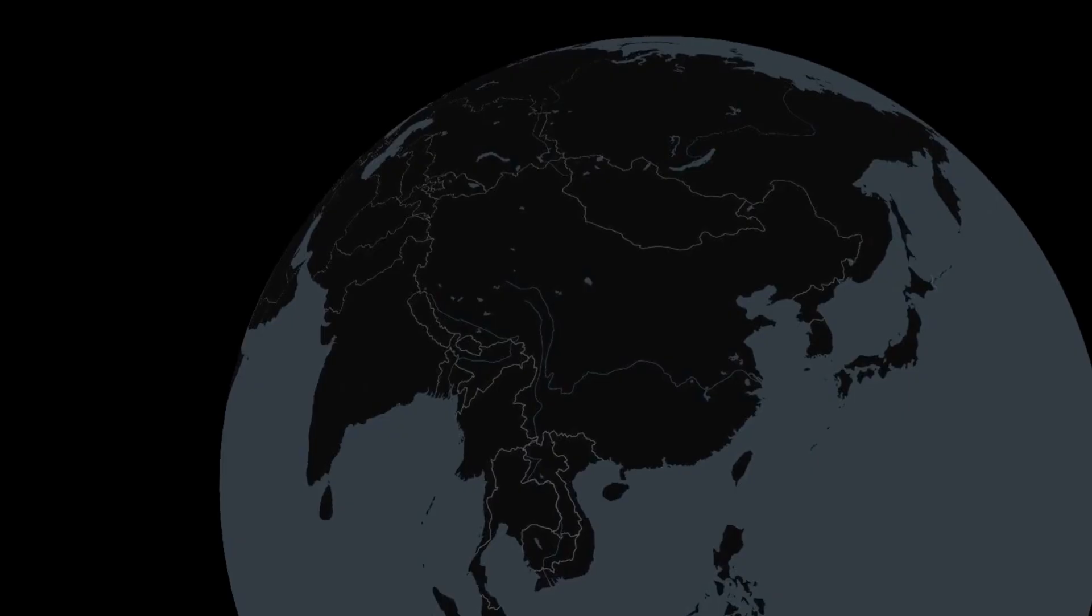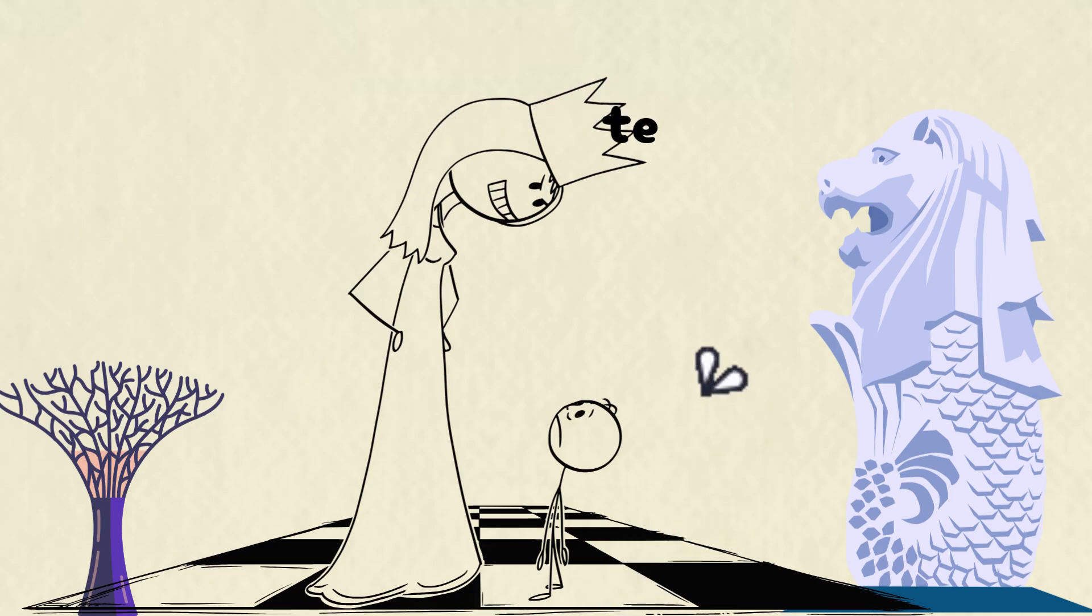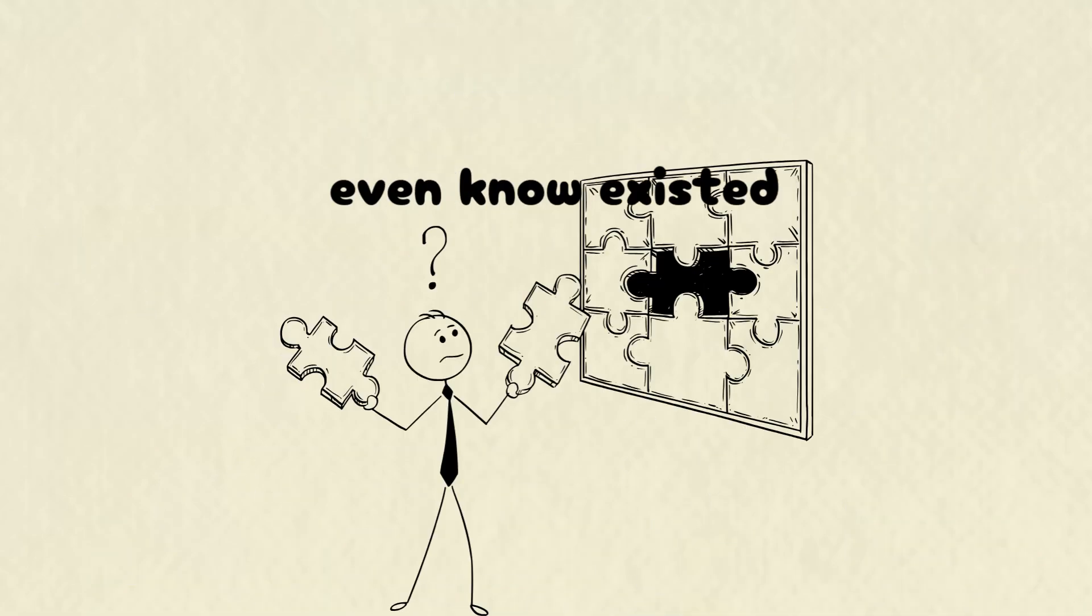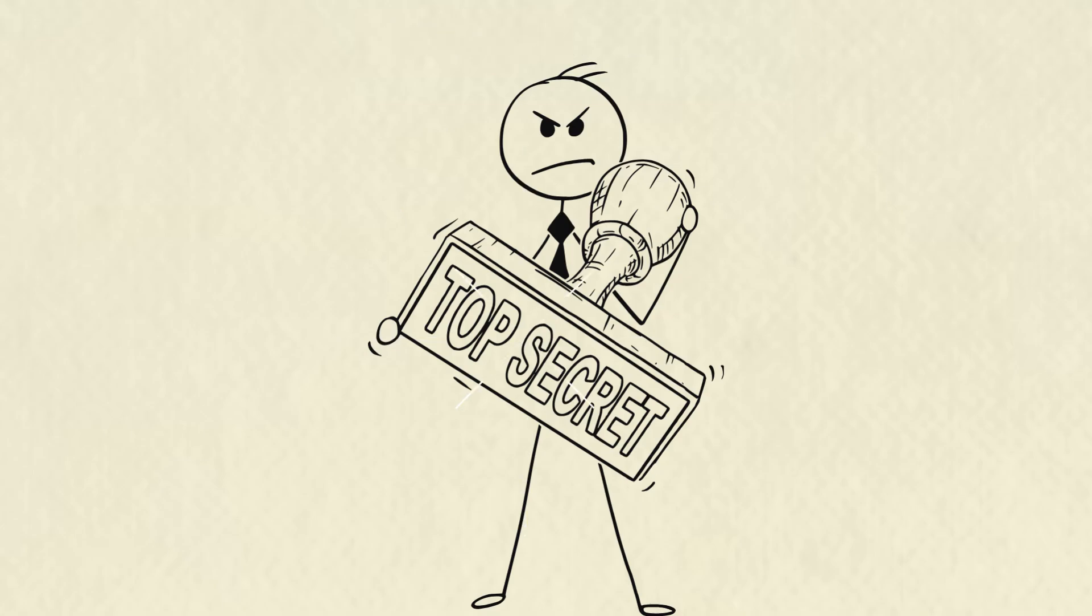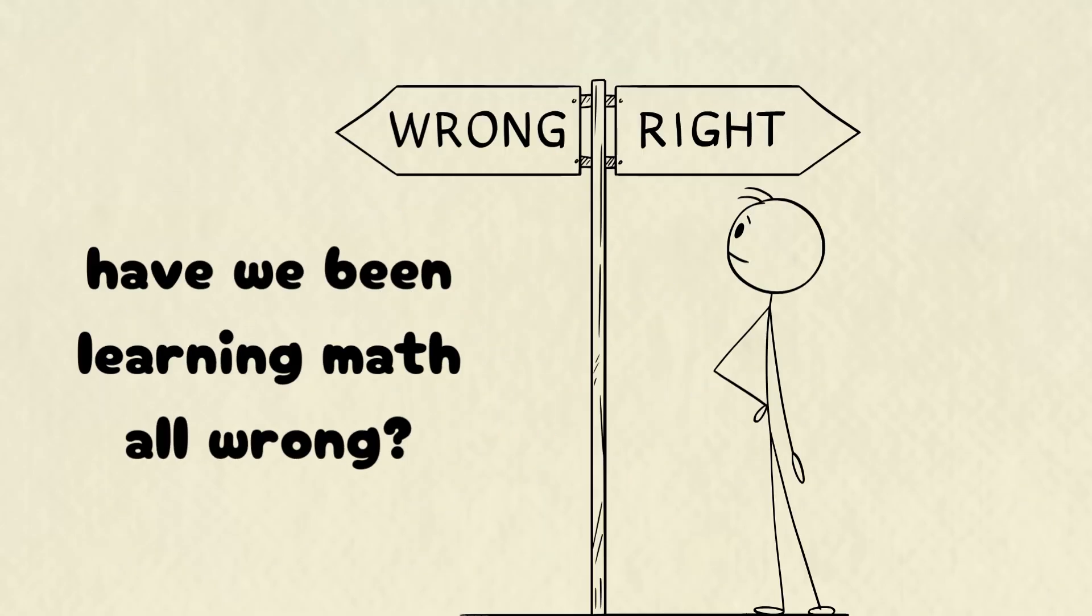Now here's the crazy part. Students in Asia seem to do the exact same math and really dominate. Top of the class, acing Olympiads, solving problems you didn't even know existed. What's their secret? Is it genetics? Tiger parents? Or have we been learning math all wrong?